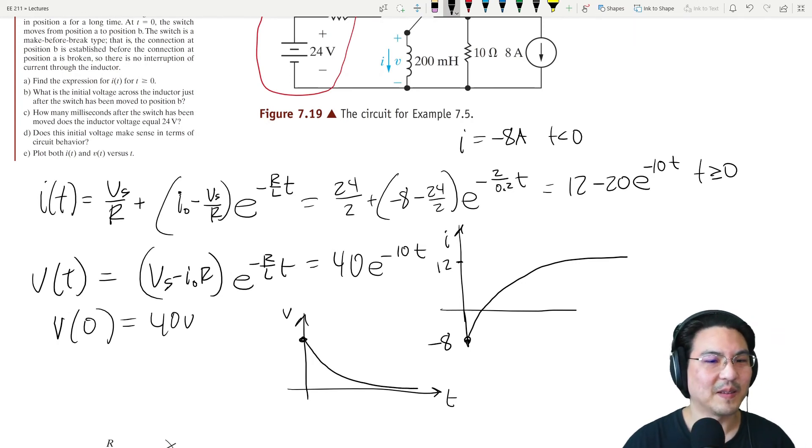Now, how many milliseconds after the switch till it hits 24 volts? So if this starts up at 40, how long for it to reach 24? We just take this formula right there: 40 e to the minus 10t, and then we want the voltage to be 24. We just solve this for t, no problem.